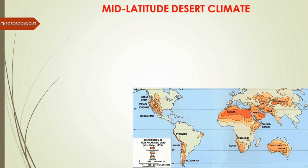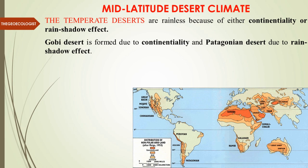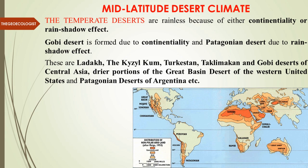Mid-latitude deserts are also known as temperate deserts. They are rainless because of either continentality — being in the interior of a continent — or the rain shadow effect. The Gobi Desert in China is a best example formed due to continentality, while Patagonia in South America is formed due to the rain shadow effect.